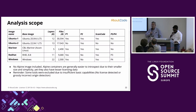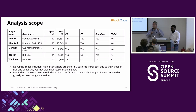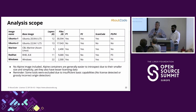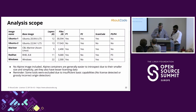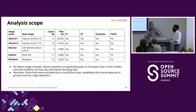In terms of analysis scope, we looked at five different images to show the variety of layers. We were not always able to complete running all scans on all images. We excluded Alpine images because they were generally simpler and have little license information. We also excluded some tools because the results they were returning were just too painful and not worth the time.